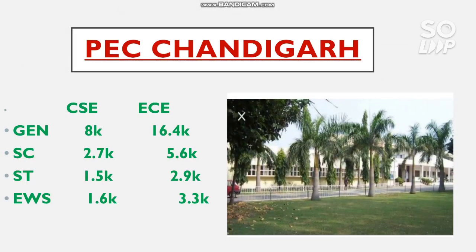The next is Punjab Engineering College, Chandigarh. Here is the cutoff for CS and EC. For General: 8,000 (CS) and 16,400 (EC). For SC: 2,700 (CS) and 5,600 (EC). You can check the remaining categories by pausing the video.